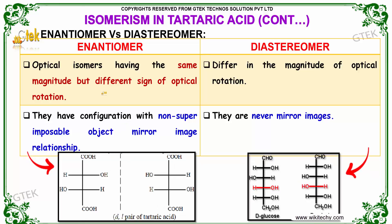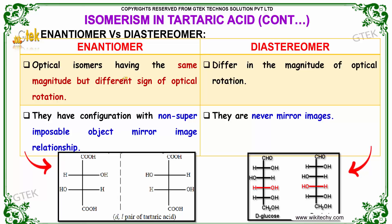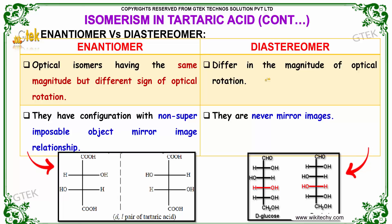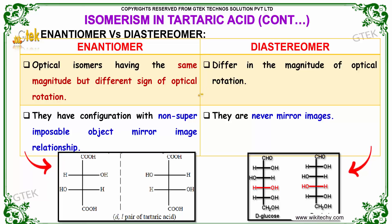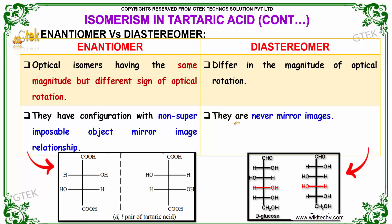Let us compare enantiomers versus diastereomers. Enantiomers are optical isomers having the same magnitude but different sign of optical rotation, whereas diastereomers differ in the magnitude of optical rotation. Enantiomers have a non-superimposable object-mirror-image relationship, whereas diastereomers are never mirror images.